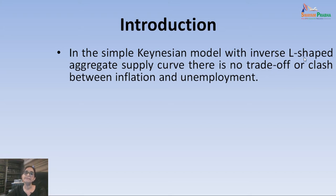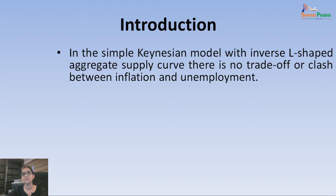Going by this inverse L-shaped aggregate supply curve, it showed that there is no clash between inflation and unemployment. Because if we are operating in the horizontal portion of the aggregate supply curve, any increase in GDP which increases employment or reduces unemployment will not bring any price change — hence inflation will not be there. So there was no clash between inflation and unemployment.